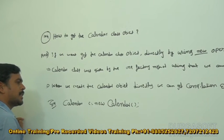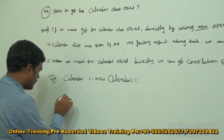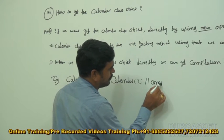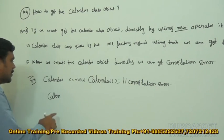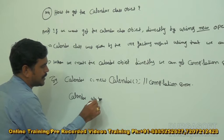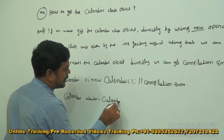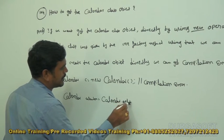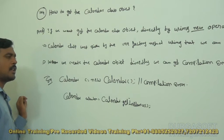If we want to get the Calendar class object, what we have to do is use: Calendar = Calendar.getInstance(). Like this, we can get the Calendar class object.